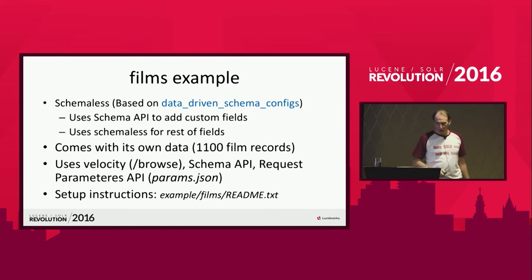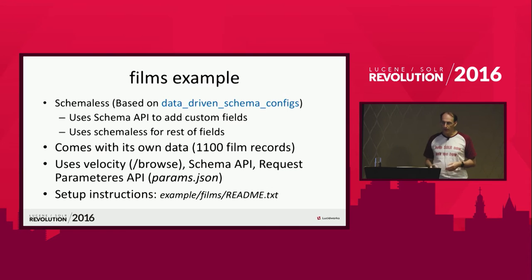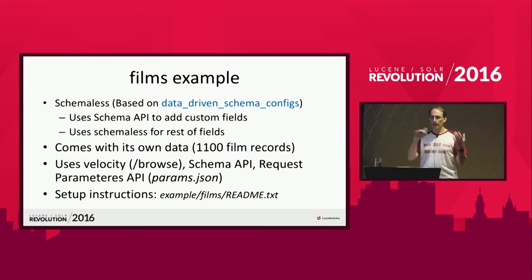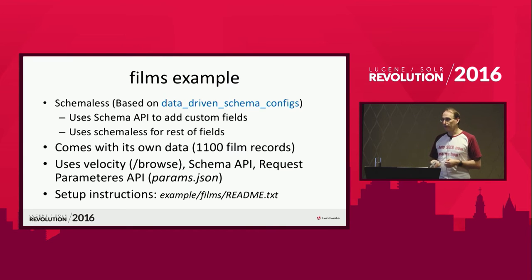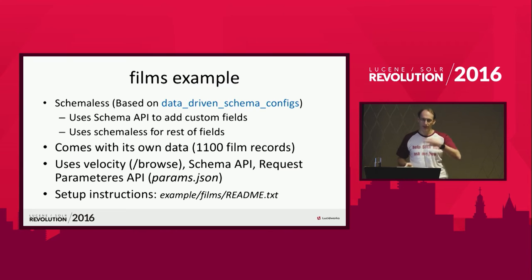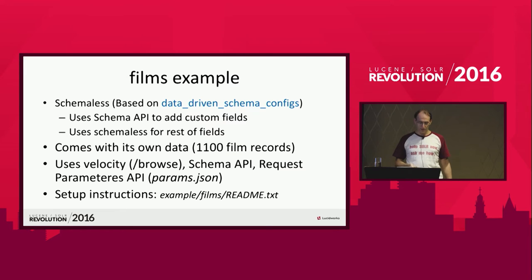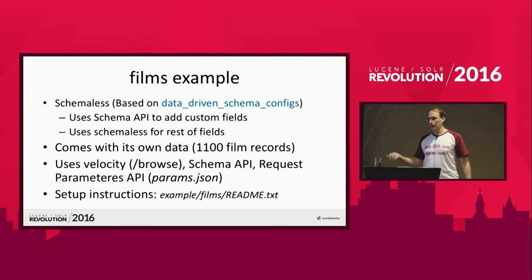The Films example is schemaless, based on data_driven_schema_configs. It uses the Schema API to add custom field definitions before schemaless mode gets triggered, for more fine-tuning, and then uses schemaless for the rest. It comes with its own data — 1,100 film records, a bigger chunk to play with. It uses Velocity for the /browse handler, uses the Schema API, and uses the Request Parameters API. It also comes with a README file that includes a script, so you can copy, paste, and run the whole thing.